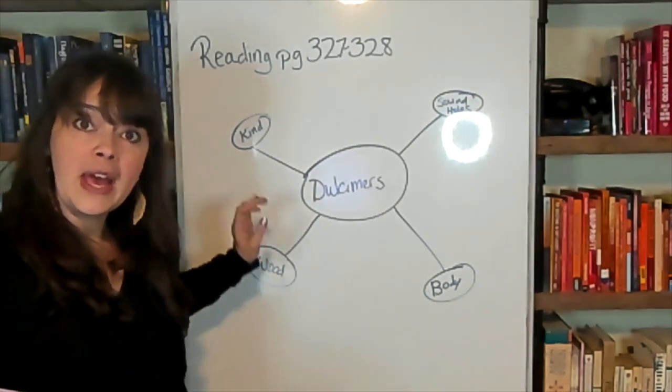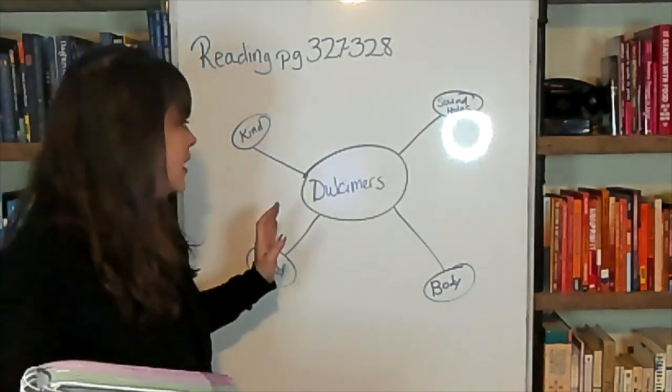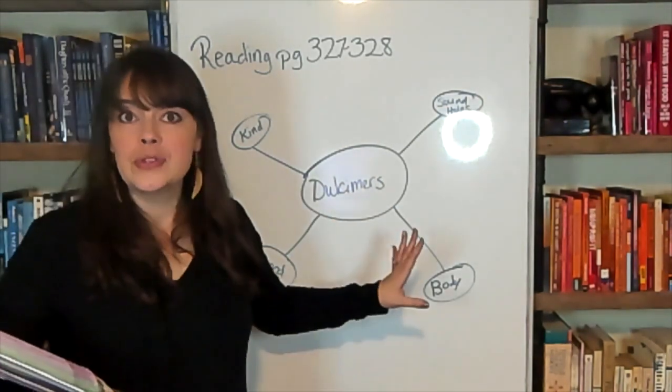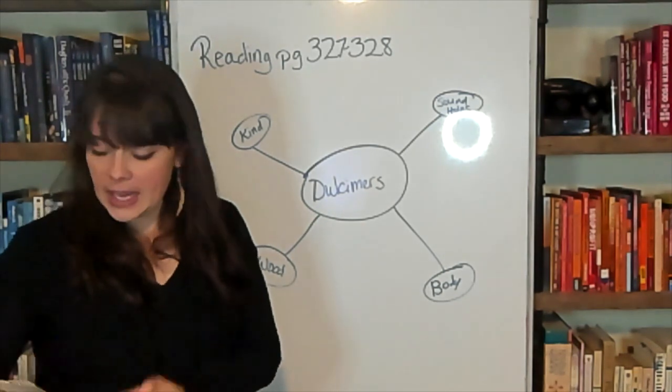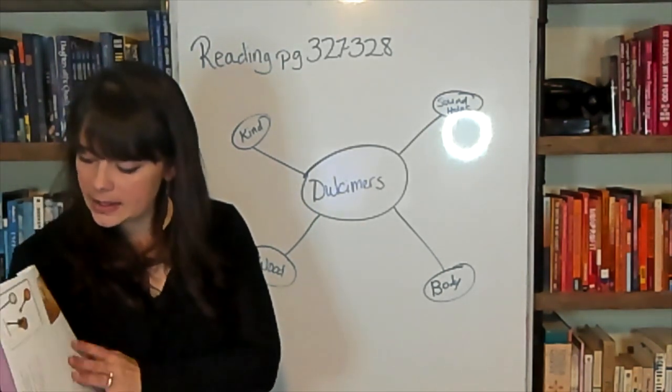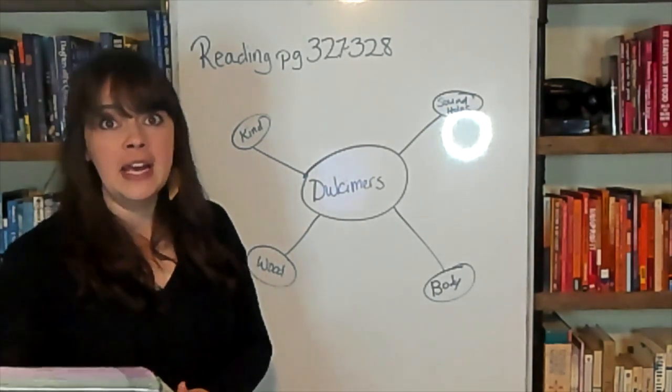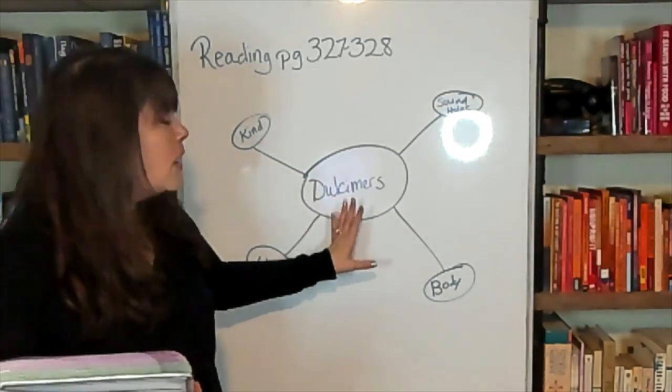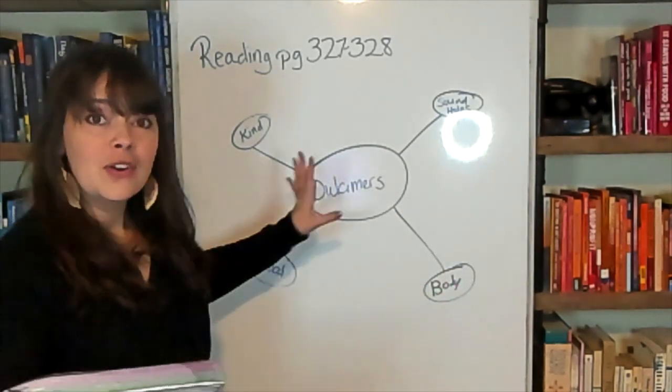When we read this article about dulcimers, that was a lot of information about dulcimers and a lot of different types of information. If we want to do something with the information, if we're researching a topic, we want to have ways to collect the information that we're learning. And this is one way. I'm going to show you one way that can be good for collecting information. This is called a word web. So let's make a word web about dulcimers. Get out your reading book and open it to the article about dulcimers.